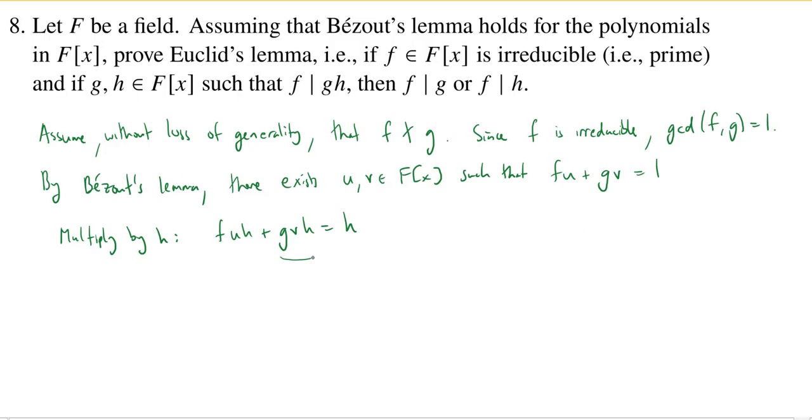Now let's just rearrange this piece here. We could write this as gh times v, and we know that f divides gh. So since f divides gh, there exists a polynomial, let's call it k, such that f times k is equal to gh. So I could rewrite this as fk times v.